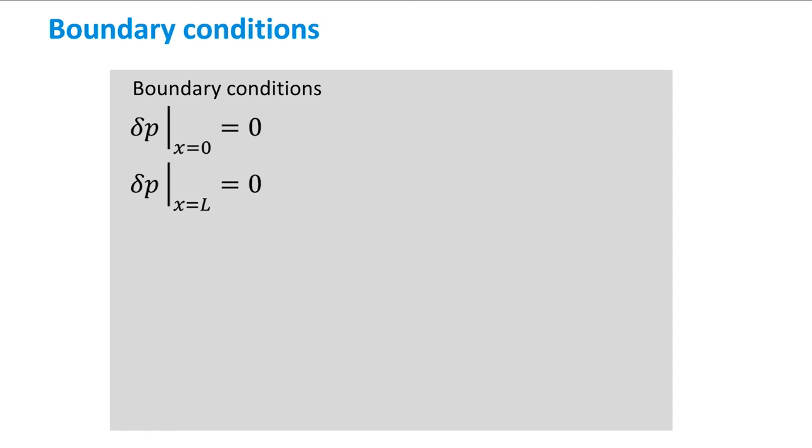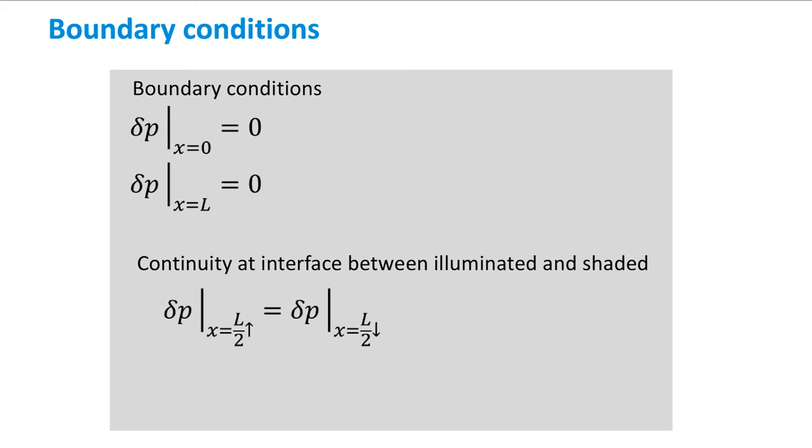But an important step is to consider the boundary between the illuminated and the shaded part. At this boundary, the carrier concentration needs to be continuous. This means that the excess carrier concentration left of the boundary needs to be equal to the carrier concentration right of the boundary. And because of continuity, the space derivative of the carrier concentration on both sides of the boundary needs to be the same as well. Now we have four boundary conditions, and we can solve the two equations.